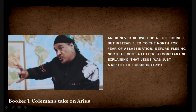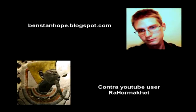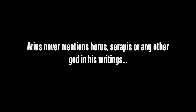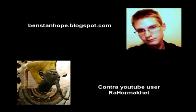Next up: Booker T. Coleman's take on Arius. He said that Arius never showed up at the council but instead fled to the north for fear of assassination, and before fleeing sent a letter to Constantine explaining that Jesus was just a ripoff of Horus in Egypt. Once again, there's one problem: we have Arius' writings. As I've stated before, I've read every single document to and from Arius, and not a single one makes any mention at all of Serapis. Arius didn't think Jesus was a ripoff of Serapis — he argued against the Trinity.